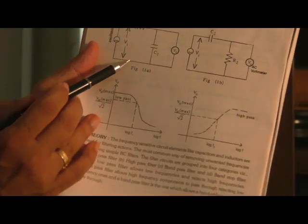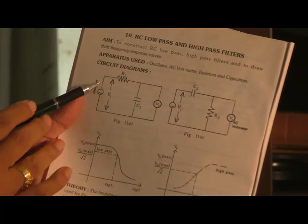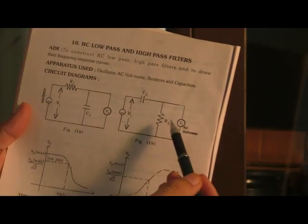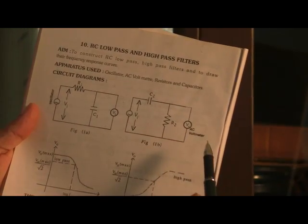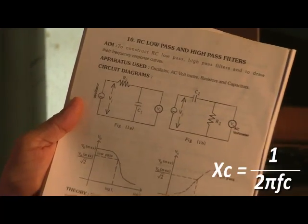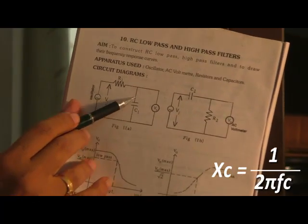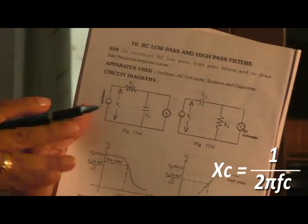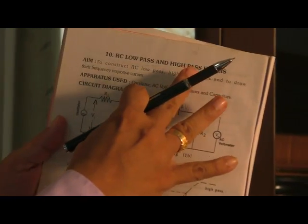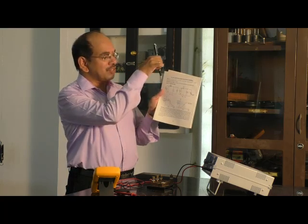Just look at the low-pass filter circuit. The signal is given across the RC combination and the output is taken across the capacitor. As the reactance of the capacitor depends on the frequency, for lower frequencies its reactance is high. Therefore, whatever signal is fed to the circuit is simply taken as the output across the capacitor. No signal passes through the capacitor.